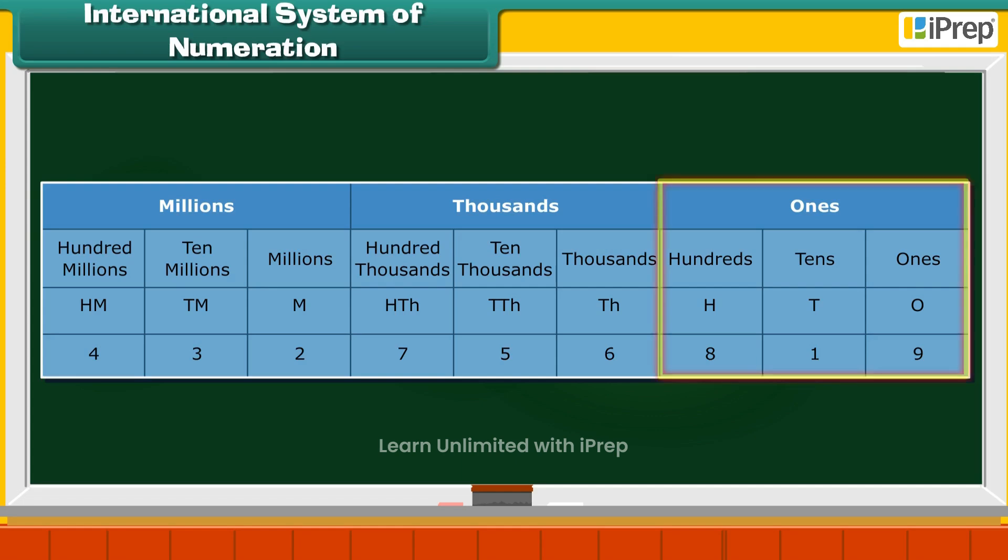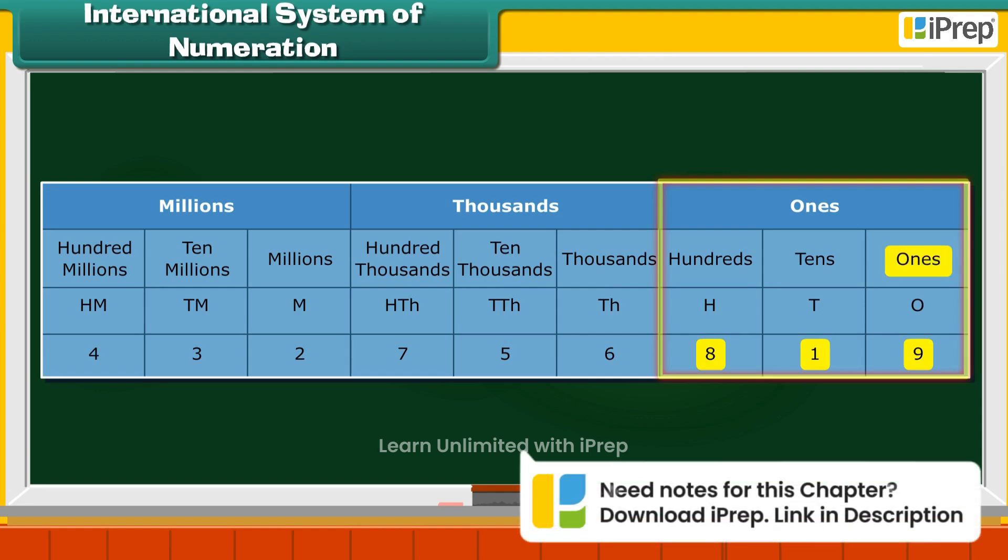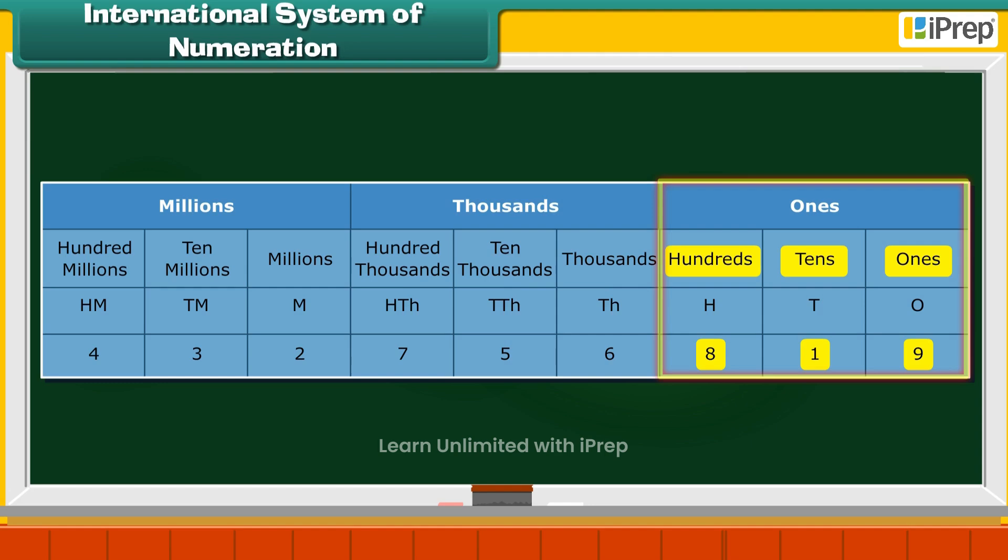The Ones group has three digits: 9, 1 and 8. Each of these digits has a specific place. They are Ones, Tens and Hundreds.